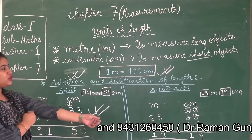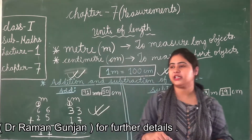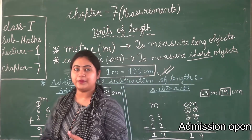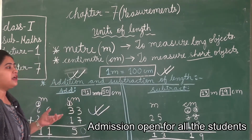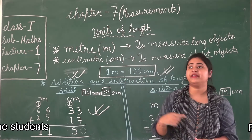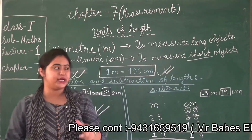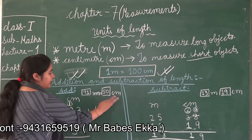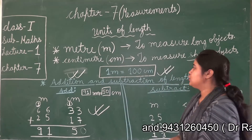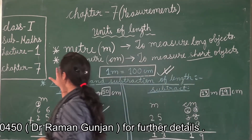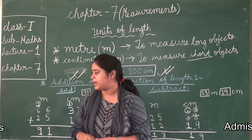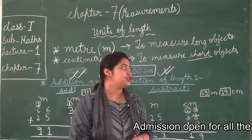In today's lecture, children, we have read about: first, units of length - meter and centimeter; for long objects we use meter and for short objects we use centimeter. We also learned about various methods of measuring length - by smaller object, by hand span, and by pace. In the next lecture, we are going to discuss about mass and how to measure mass. Thank you, children.